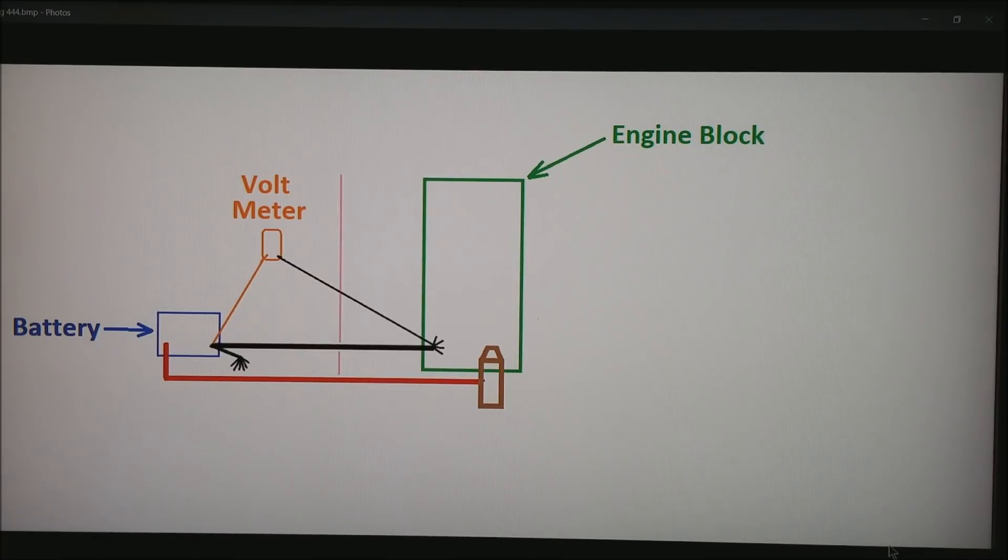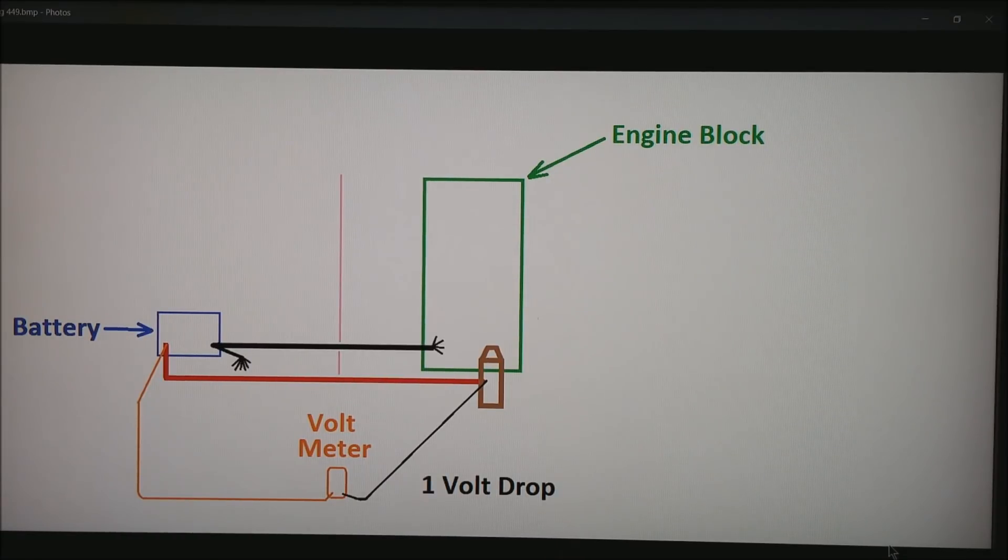If you place your voltmeter from the ground at the battery and run all the way up to the engine block and go ahead and check voltage, during cranking you'll probably find that you're dropping about a volt through this big wire. Now if you do the same test on the positive lead with your voltmeter, you will probably also get a drop of about 1 volt.